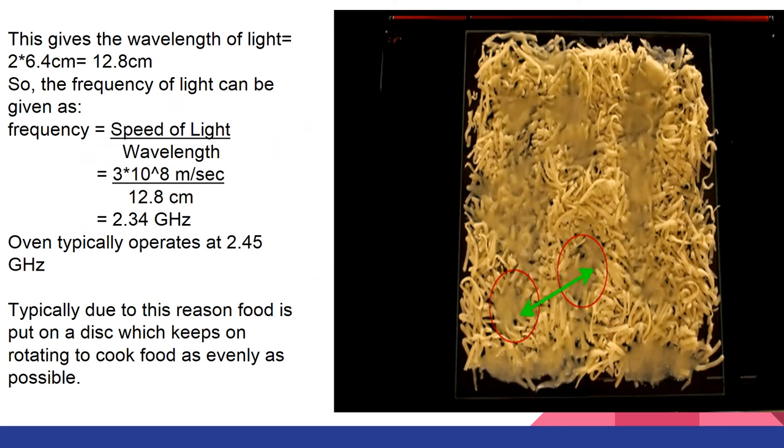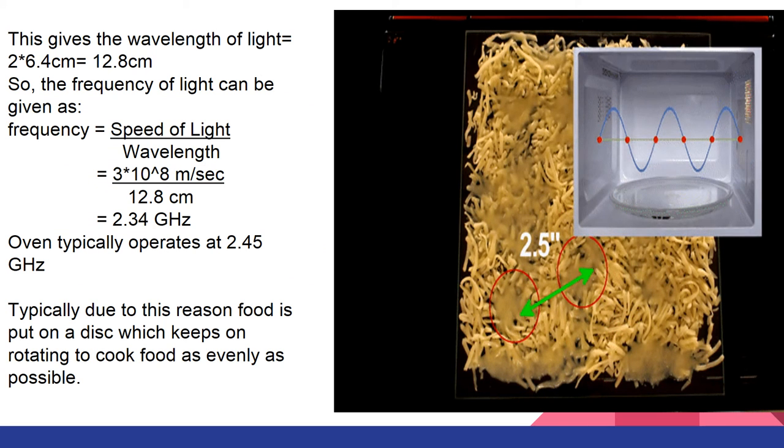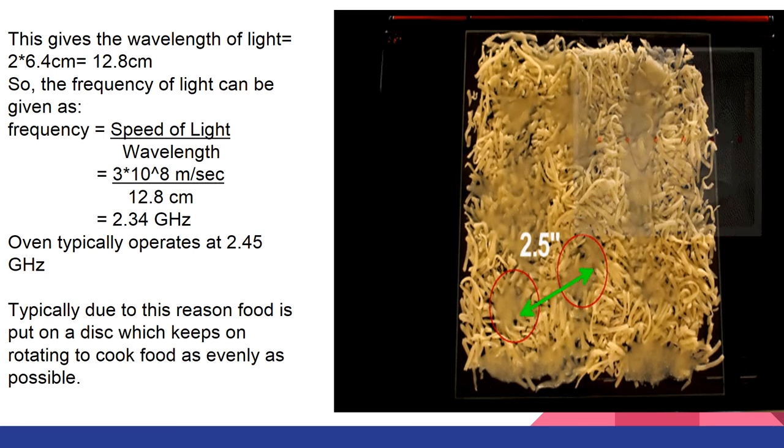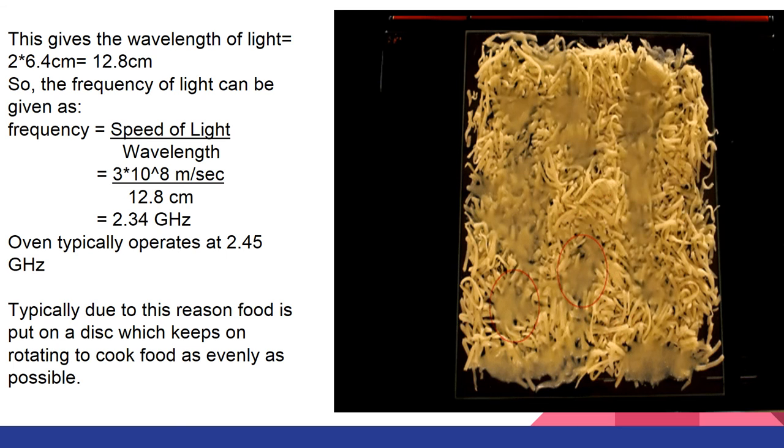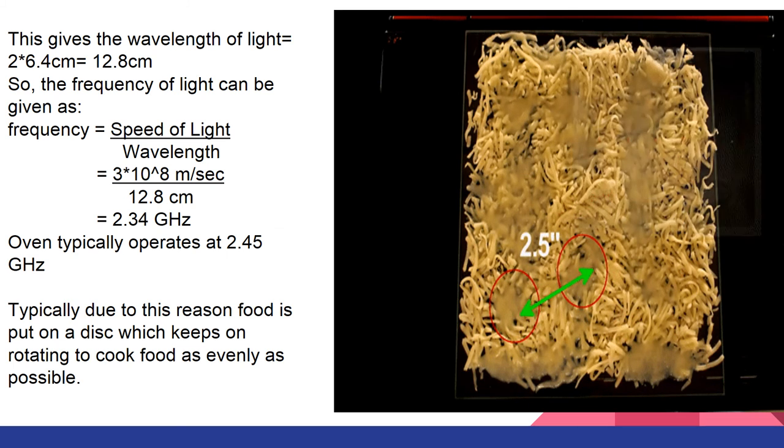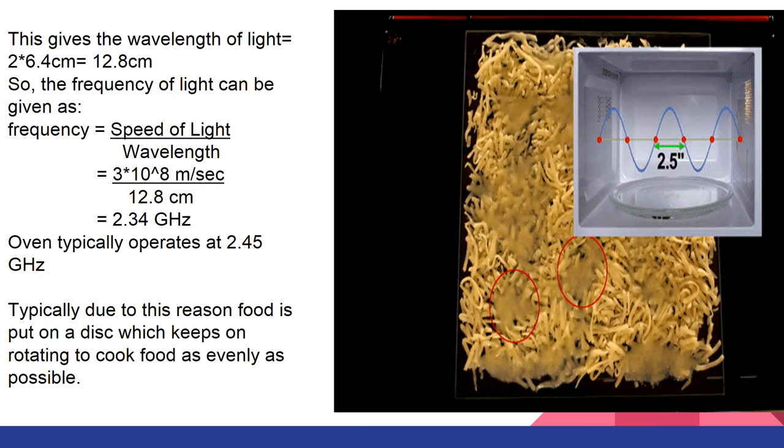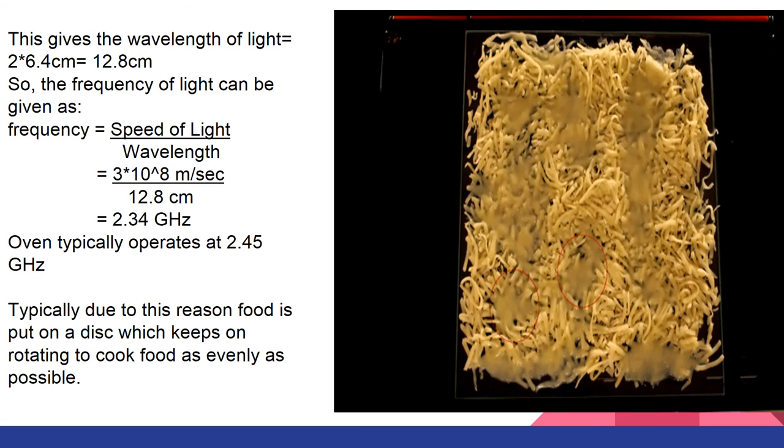Now we measure the distance between two nodes or two non-heated regions in cheese. This comes out to be 2.5 inches. So the wavelength of microwave from this experiment comes out to be 5 inches or 12.8 cm. Calculating frequency from this value of wavelength gives the frequency equal to 2.34 GHz as shown in the calculations.